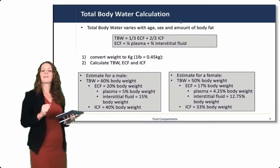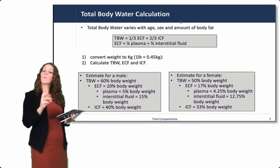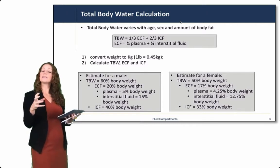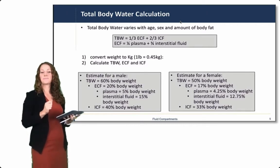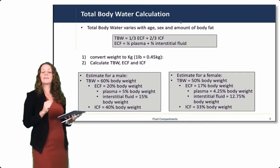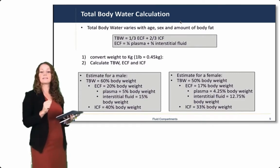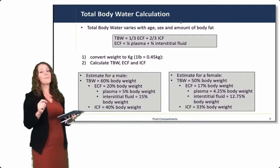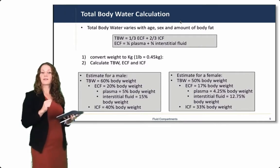Let's look at how we calculate total body water. Total body water is approximately one third ECF and two thirds ICF, meaning that most of the water in our bodies is within the cells. The ECF compartment, within that one third, one quarter of that is plasma and three quarters of that is interstitial fluid. You're going to want to write down these numbers and remember them as we move forward in our calculations.